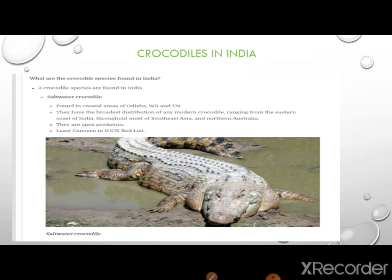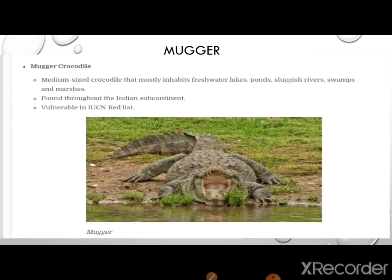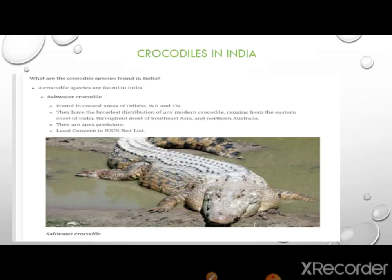There are three kinds of crocodiles in India — freshwater, saltwater, and others. Once, perhaps fifty to one lakh years ago, they had a common ancestor. But when they transferred to different habitats — salt water and fresh water — they evolved in a certain way and developed unique morphological and physiological characters so they can live in that particular habitat.